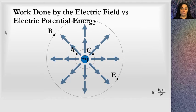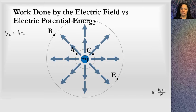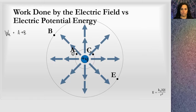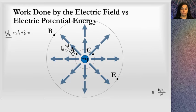I might ask you: what is the sign of the work done by the electric field in moving a positive point charge from point A to point B? Well, if I put a positive charge at point A, it does not want to be close to this positive charge in the middle, and it will spontaneously move to point B. The electric field will force it in that direction — the electric force and displacement are along the same direction — so the work done by the electric field is positive.